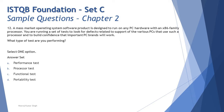Let's get started with Question 12. A mass market operating system software product is designed to run on any PC hardware with an x86 family processor. You are running a set of tests to look for defects related to support of the various PCs that use such a processor, and to build confidence that important PC brands will work with it. What type of test are you performing?